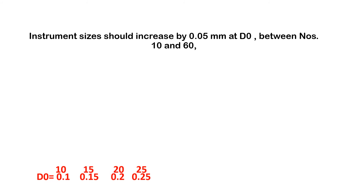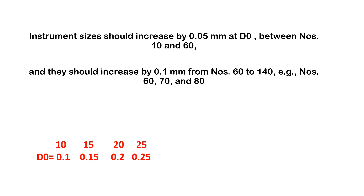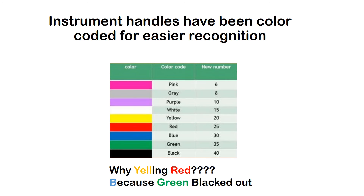Instrument sizes should increase by 0.05 mm at D0 between numbers 10 and 60. Moving from 10 to 15, 20, 25, the tip diameters are 0.10, 0.15, 0.20, 0.25 — a constant increase of 0.05 mm. From number 60 to 140, the numbers increase by 0.1 mm: tip diameters at 60, 70, 80, 90 are 0.6, 0.7, 0.8, 0.9 mm.